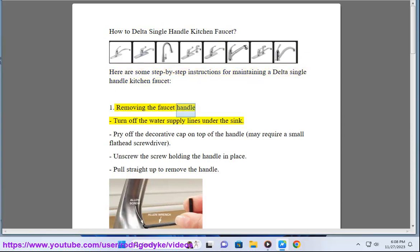First, removing the faucet handle. Turn off the water supply lines under the sink. Pry off the decorative cap on top of the handle, which may require a small flathead screwdriver. Unscrew the screw holding the handle in place, then pull straight up to remove the handle.